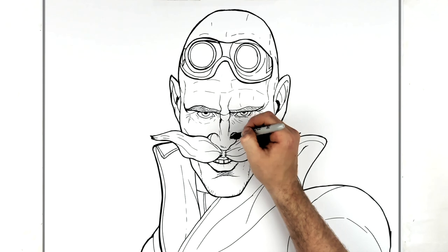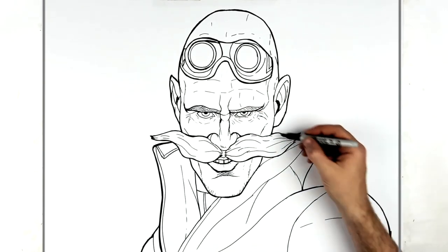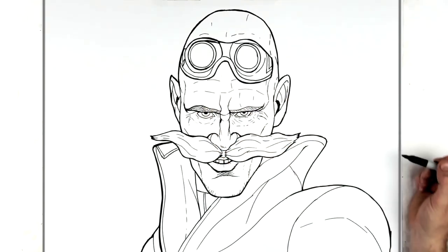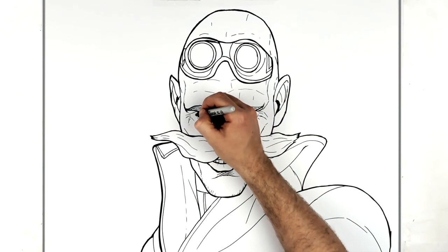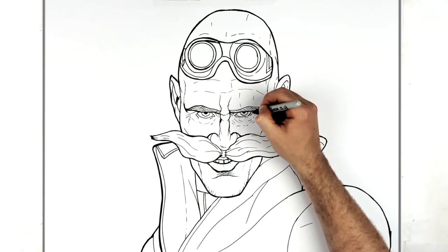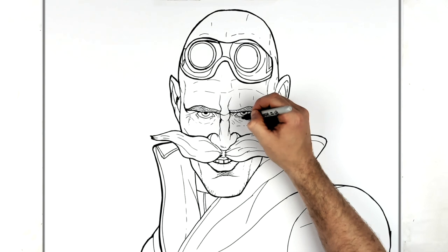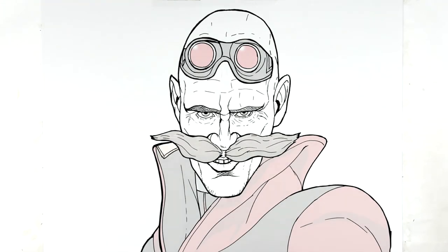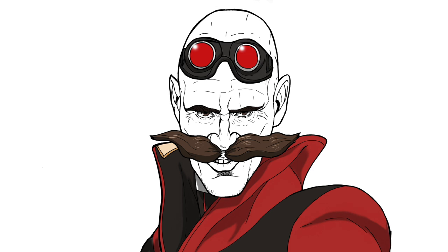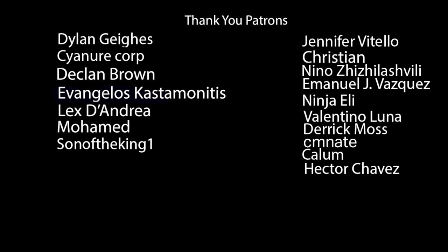Some nostrils there. You can just add whatever you want — shade or colour — but I'll leave it there. Just noticing some eyelashes just down here. That's how to draw Dr. Robotnik — Jim Carrey's Dr. Robotnik from Sonic the Hedgehog. Hope that's a good one. Thank you.